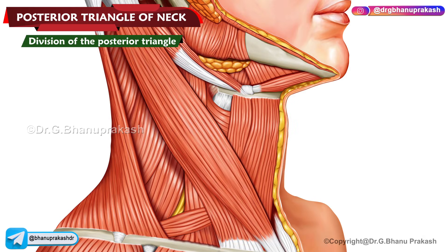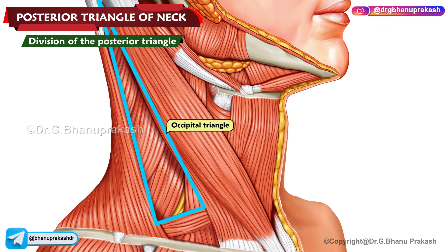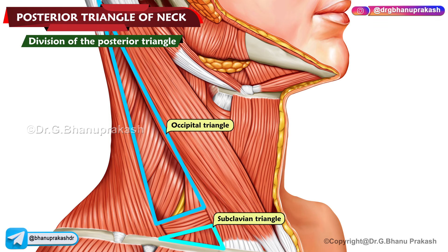Division of the posterior triangle. It is subdivided by the inferior belly of the omohyoid muscle into a large upper part called the occipital triangle and a smaller lower part called the supraclavicular or the subclavian triangle.